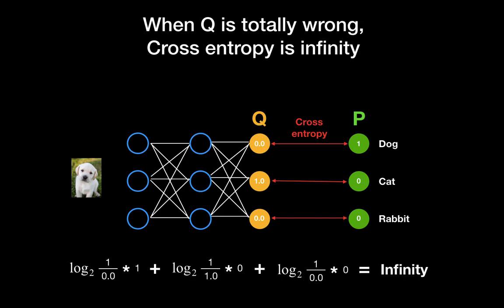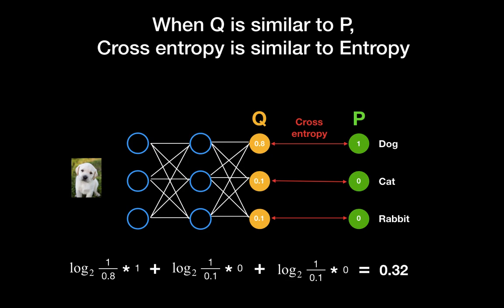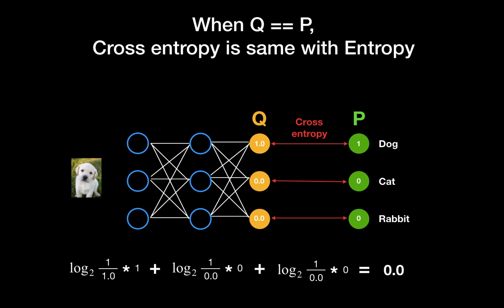When prediction is totally wrong, the cross-entropy value will be infinity, as you can see in the calculation in this slide. If the prediction is similar to the true probability distribution, the cross-entropy is similar to the entropy. When the prediction is exactly the same as the true probability distribution, the cross-entropy value is the same as the entropy.